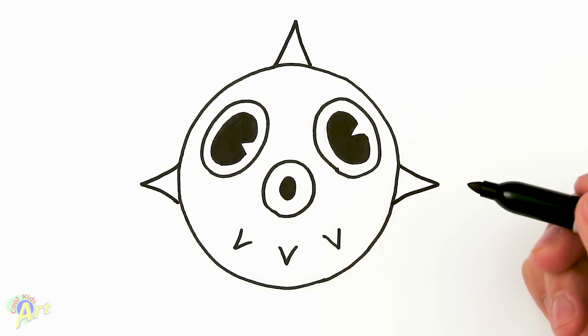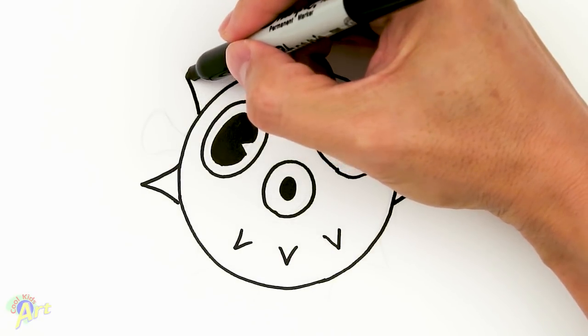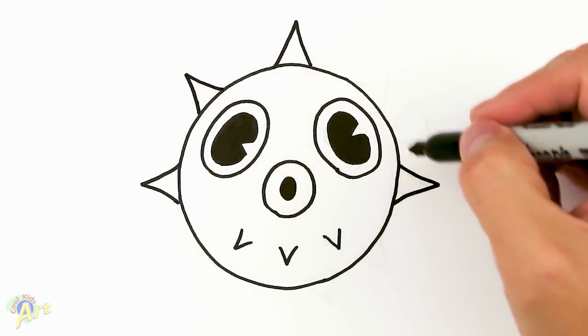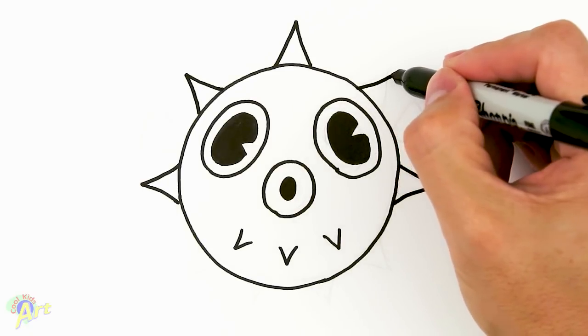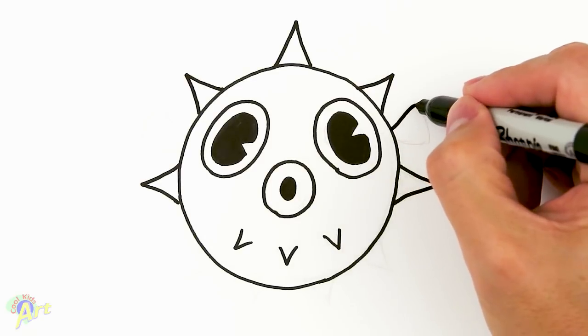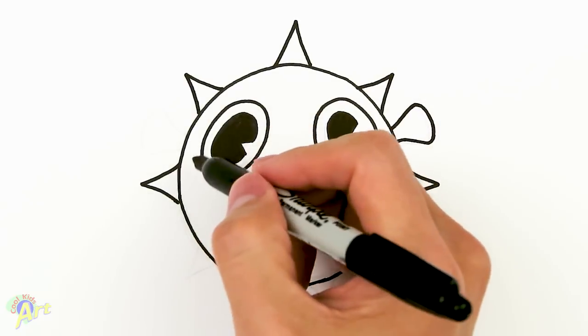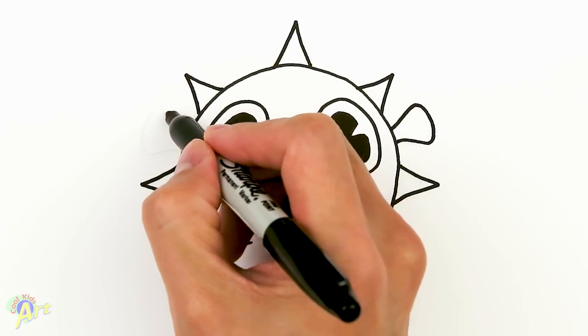And another one here. Okay, and in between these two, we're going to draw one here. In between these two, we're going to draw one here, and then in between these two, we're going to draw the little fins. So just rounder. All right, and in between these two, same thing, just another fin.